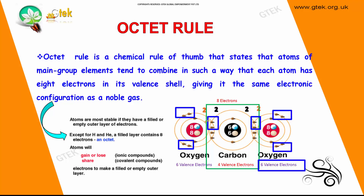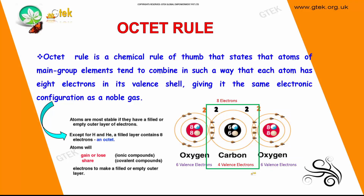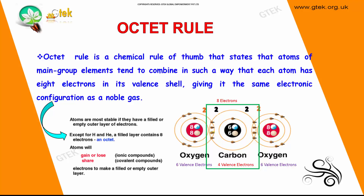Oxygen gives 2 valence electrons and Carbon gives 2 valence electrons to form 8 valence electrons total. If the condition is satisfied by the center element with 8 valence electrons, that is referred to as the octet rule. Atoms will gain or lose electrons — that is called ionic compounds — and if electrons are shared, it is called covalent compounds.